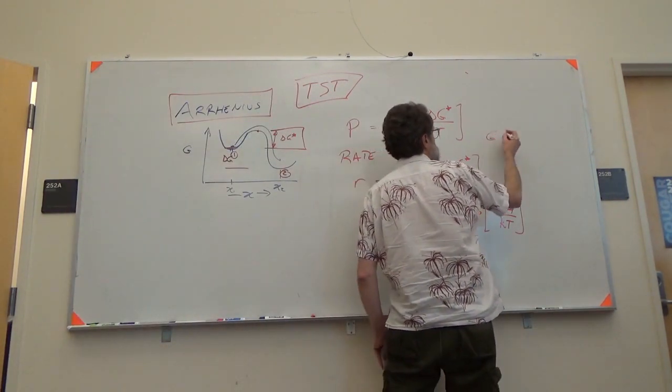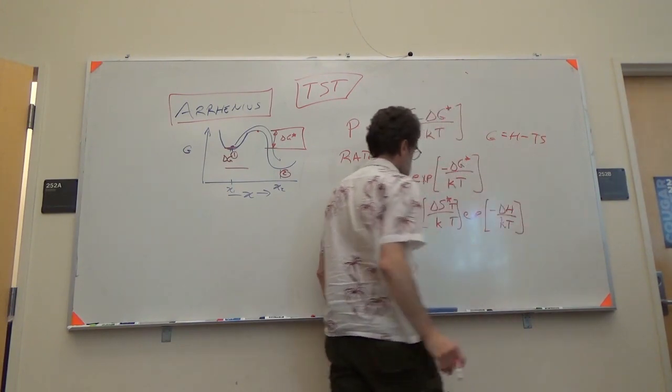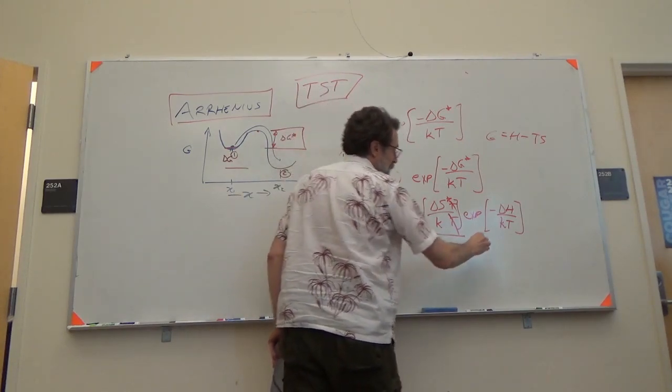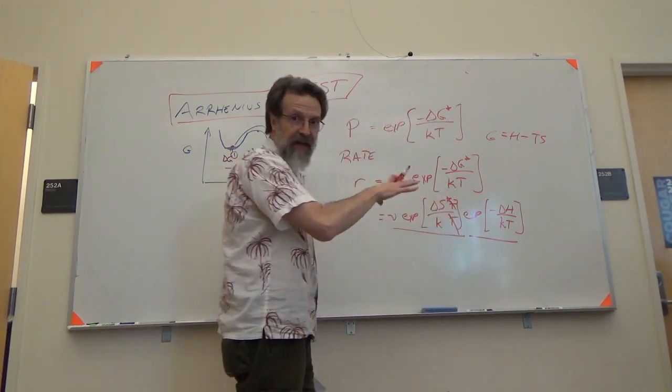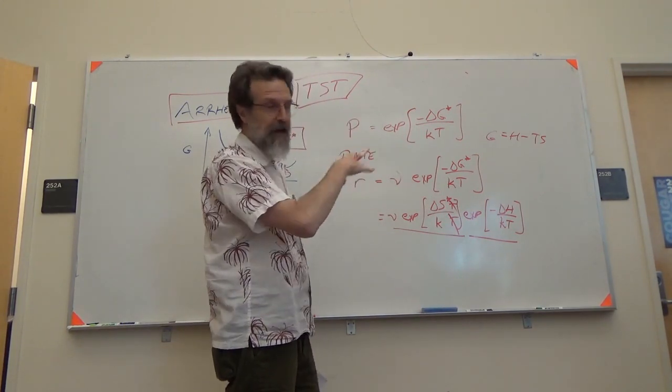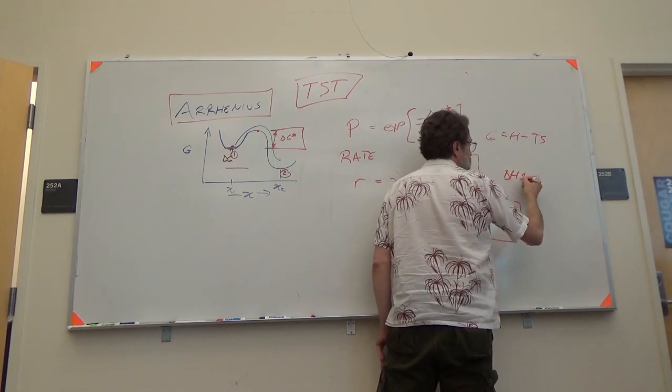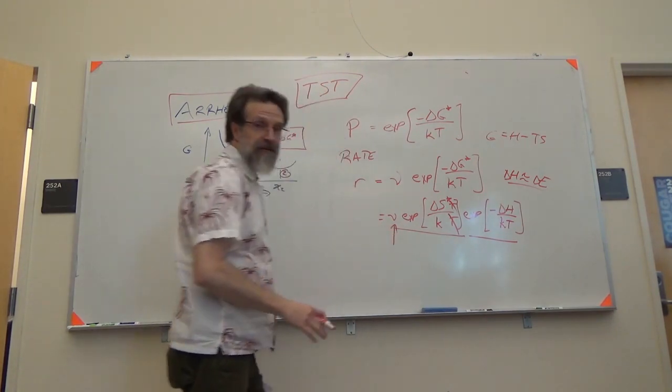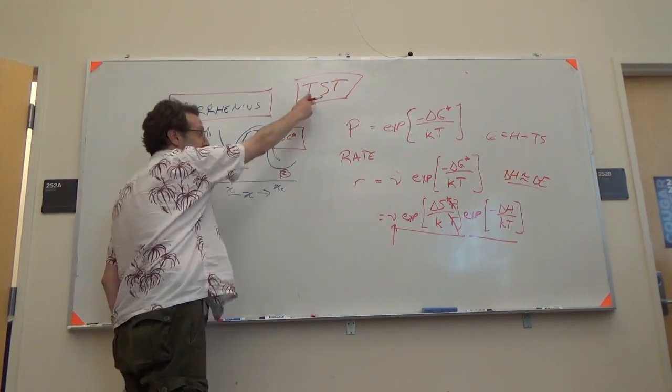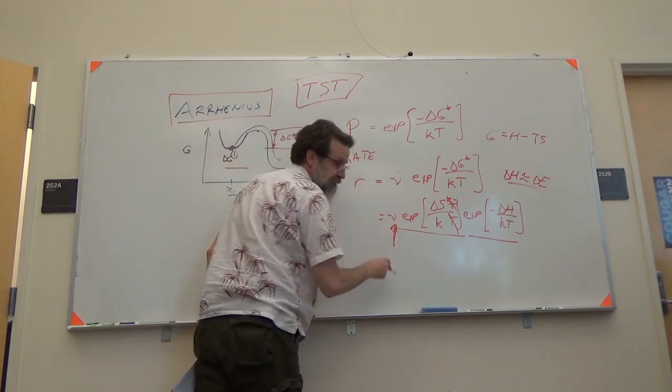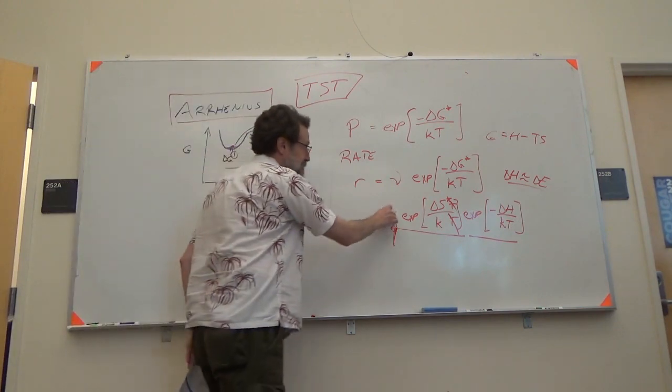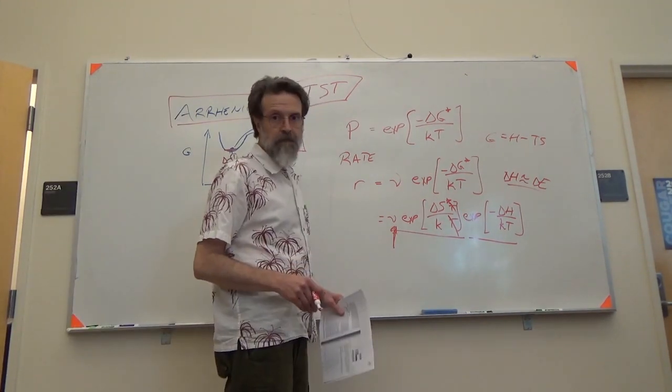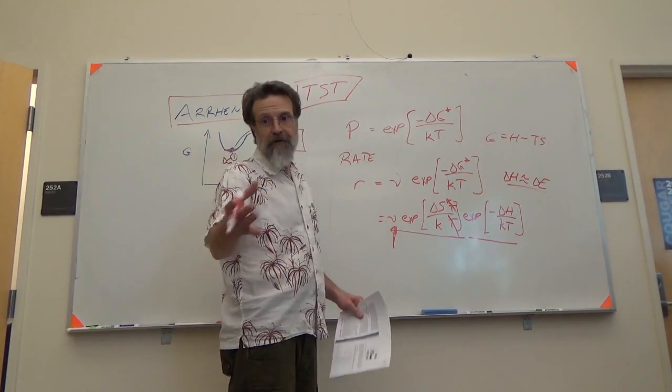So writing out G equals H minus TS. These T's are going to cancel. That's going to be some coefficient out front. This is going to depend on the enthalpy. And remember, in the case of solids, the enthalpy and internal energy are very close. And this nu, that's the frequency of attempts. And again, talking about transition state theory, this is where transition state theory has an advantage because transition state theory handles that frequency for you.